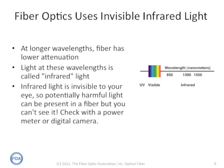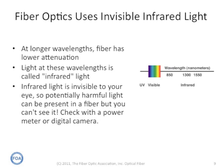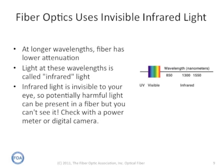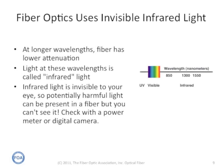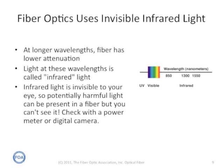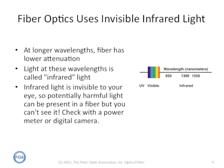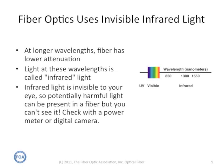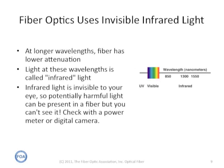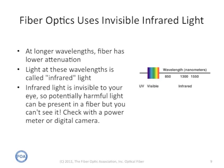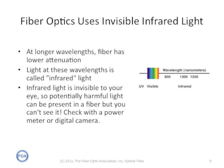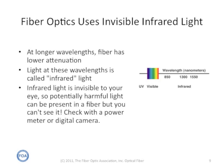Because the attenuation of the optical fiber is less at longer wavelengths, that's where we tend to use them for transmission. Those longer wavelengths are called infrared light and are mostly invisible to the human eye. Since the light in the optical fiber is invisible to your eye, it is a problem. If it is large enough in power to be harmful to your eye, you can't see it, but you can check the power level with a power meter or a digital camera. There's an FOA YouTube video showing you how to use a digital camera to determine if there's light in the fiber.